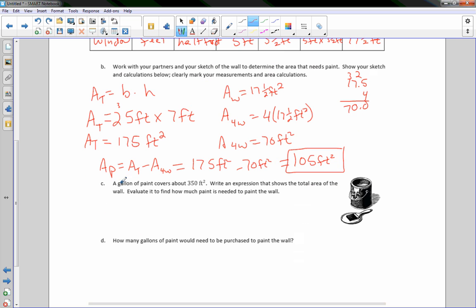So C says a gallon of paint covers about 350 square feet. Write an expression that shows the total area of the wall. Evaluate it to find how much paint is needed to paint the wall. So what this is asking for is write an expression that shows the total area of the wall. I have done that. We already did it up here. So I'm just going to bring down my answer from B. So my expression to show the total area of the wall would be the total area minus the area of the four windows. So this would be my expression. Remember expressions don't have equal signs. So it would be the area total minus the area of the four windows. And then in calculating that, I now know that I need 105. I need enough paint to cover 105 square feet.